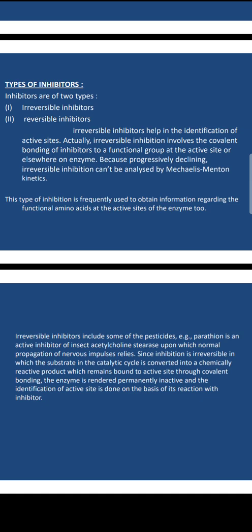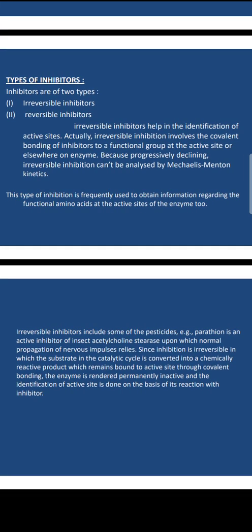Irreversible inhibitors cannot be analyzed by Michaelis-Menten kinetics. This type of inhibitor is frequently used to obtain information about the functional amino acids at the active sites of the enzyme. Irreversible inhibitors include some pesticides. For example, an inhibitor of acetylcholinesterase — upon which normal propagation of nervous impulses depends — is converted into a chemically reactive product which remains bound to the active site through covalent binding, rendering the enzyme permanently inactive. The identification of the active site is thus done on the basis of its reaction with inhibitors.